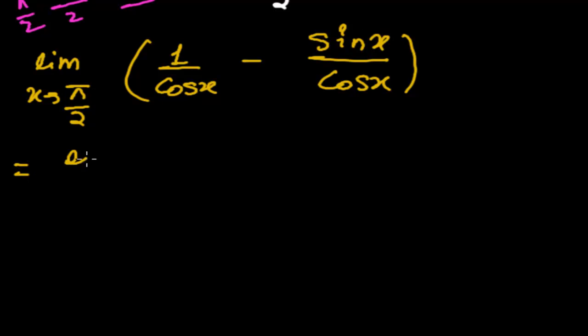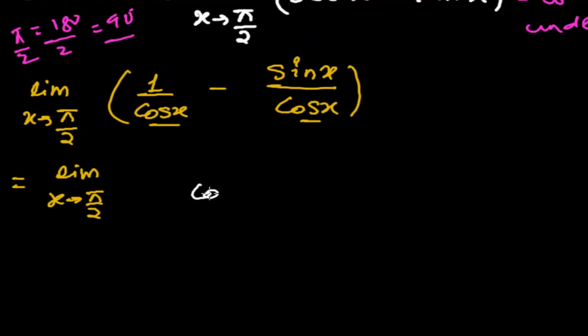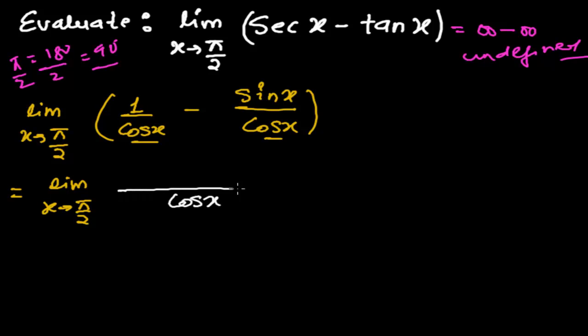So now, for the limit when x tends to π/2, I can take the LCM of this both. So it will be cos x, and 1 minus sin x. But still, I'm not getting what we need. Because, you know...